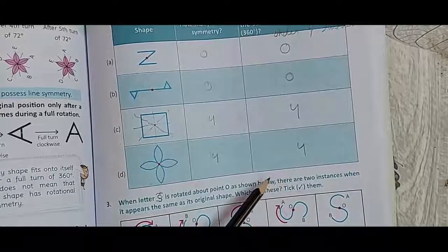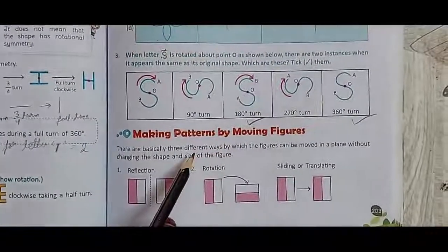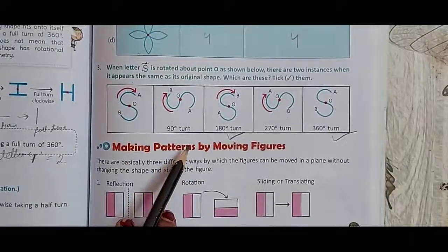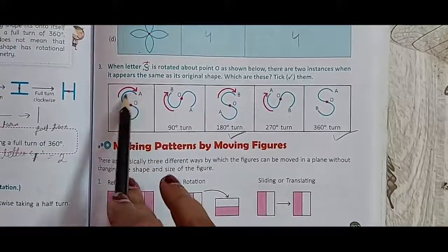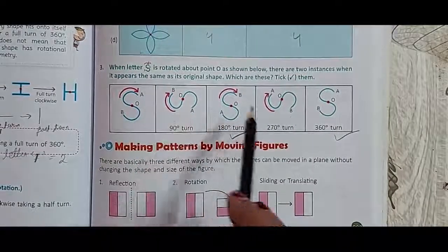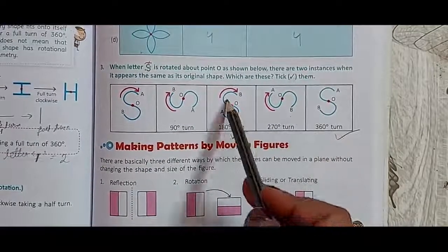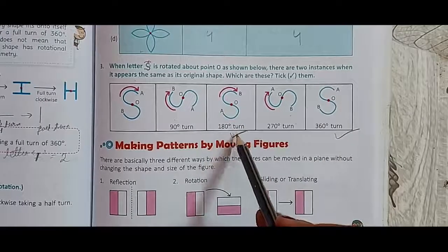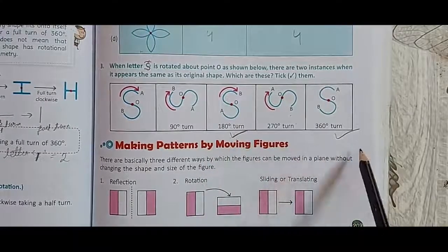Now question number 3 shows letter S. The original shape of letter S only matches in two instances — at 180 degrees turn and at the full turn — so the order of rotation is 2.